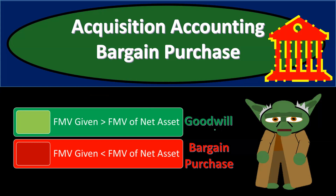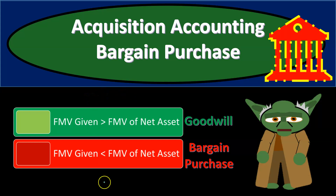Goodwill is quite common because even after you reassess all assets and liabilities to fair value, you would typically expect the consideration given to be at least equal to — or more than — the fair market value of net assets, since there's usually some goodwill in the organization. But what if it was the opposite? What if the amount given in exchange was less than the fair market value of the net assets?